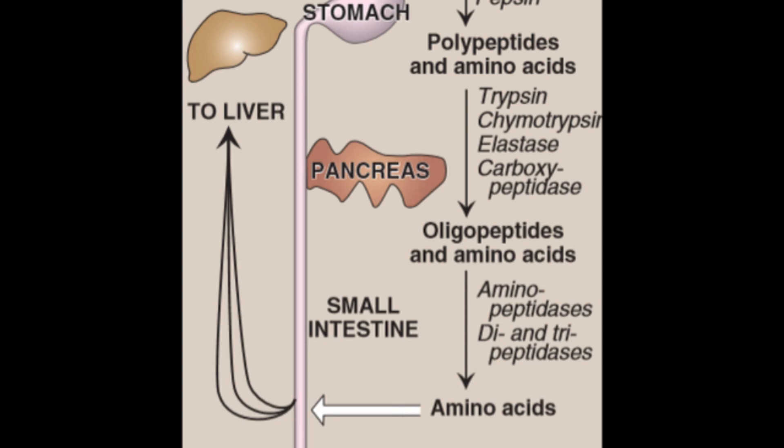Finally, in the small intestine the amino acids are absorbed and they are carried in the portal circulation into the liver where they are metabolized.